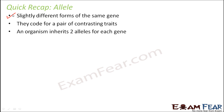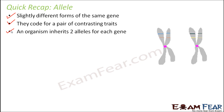Alleles are nothing but slightly different forms of the same gene. For example, if we talk about hair color, hair color can be brown or black. So brown and black are two different forms of the same gene. These alleles code for a pair of contrasting traits. An organism inherits two alleles for each gene — one allelic pair forms a gene. One allele will come from the father and the other allele will come from the mother.